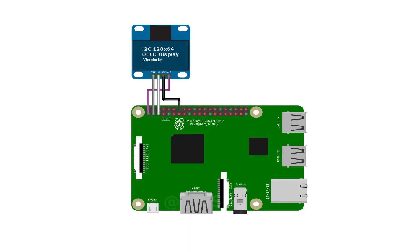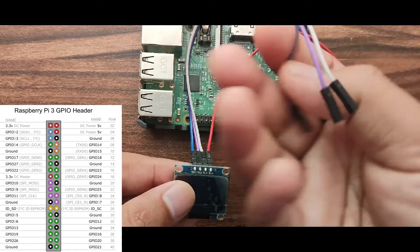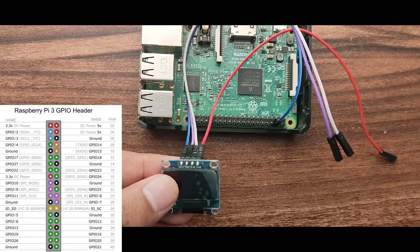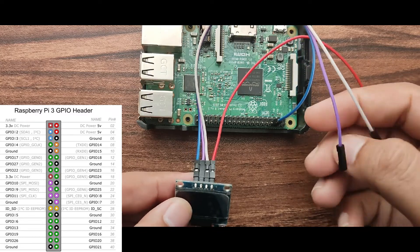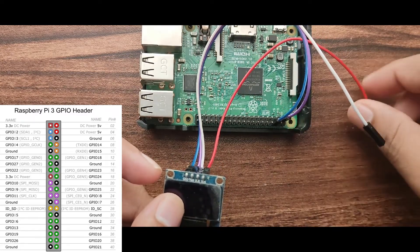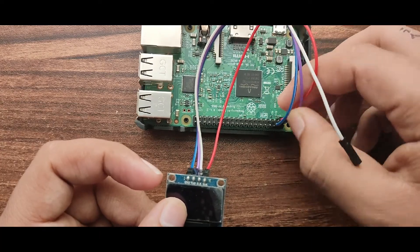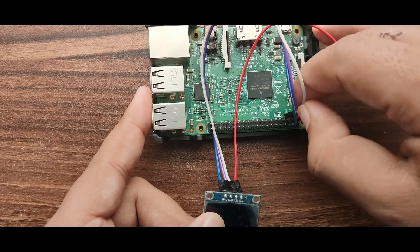This is the connection diagram. You can find the connection diagram link in the description. Here you can refer to the pinout of the Raspberry Pi. Pin number 2 and 4 are 5V, and pin number 6 is GND. So pin 4 and 6 are connected to the OLED display. Pin number 3 and 5 are I2C pins, SDA and SCL respectively, which are connected to the OLED display.